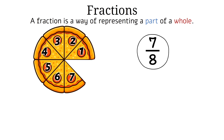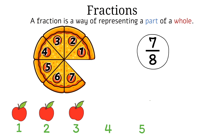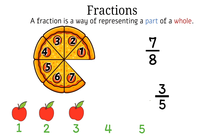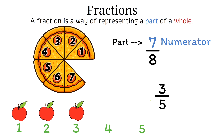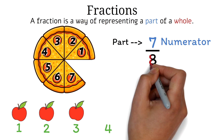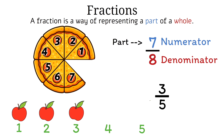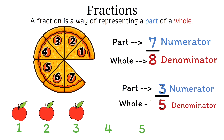Or let's say you have 5 apples, and you eat 2 of them. You will be left with 3 out of the 5 apples available. Here, 3 over 5 is a fraction. For a fraction, the top number, called the numerator, tells how many parts we are concerned about. In the case of the pizza, the 7 represents the part left. The bottom number, called the denominator, tells how many equal parts the whole is divided into. In the case of the pizza, we have 8 because it is divided into 8 parts. Same idea with the apples. Note that every fraction has a numerator and a denominator.